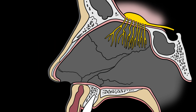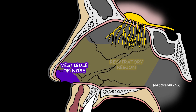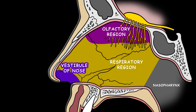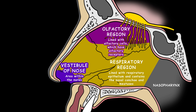The nasal cavity runs from the vestibule of the nose to the nasopharynx. It has three sections: the vestibule, respiratory region, and olfactory region. The vestibule is the area within the nares. The respiratory region is lined with respiratory epithelium and contains the nasal conchae and meatuses. The olfactory region, found at the apex of the nasal cavity, is lined by olfactory cells, which have olfactory receptors.